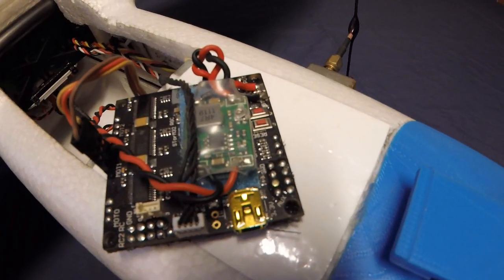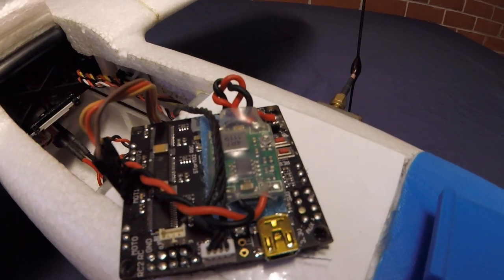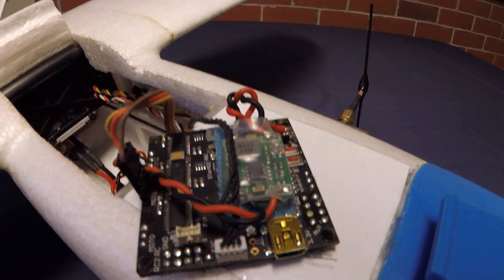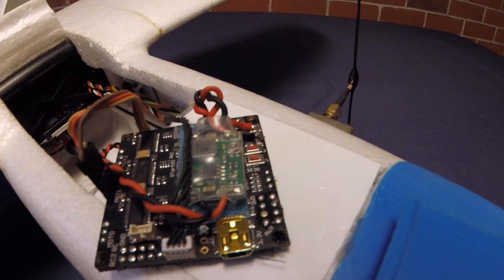This green board here is a regulator to power the Storm 32 board. That's hooked up directly to the flight battery and it's set for 12 volts.